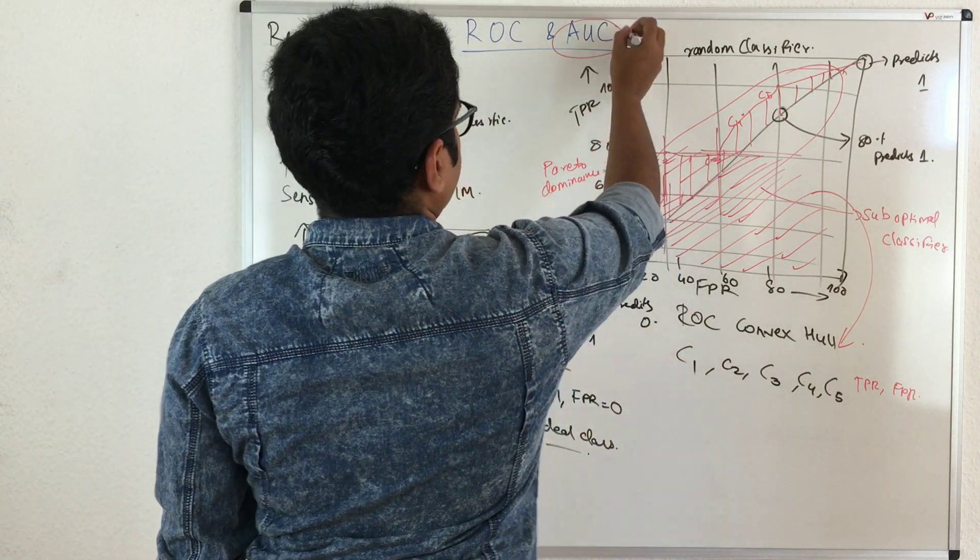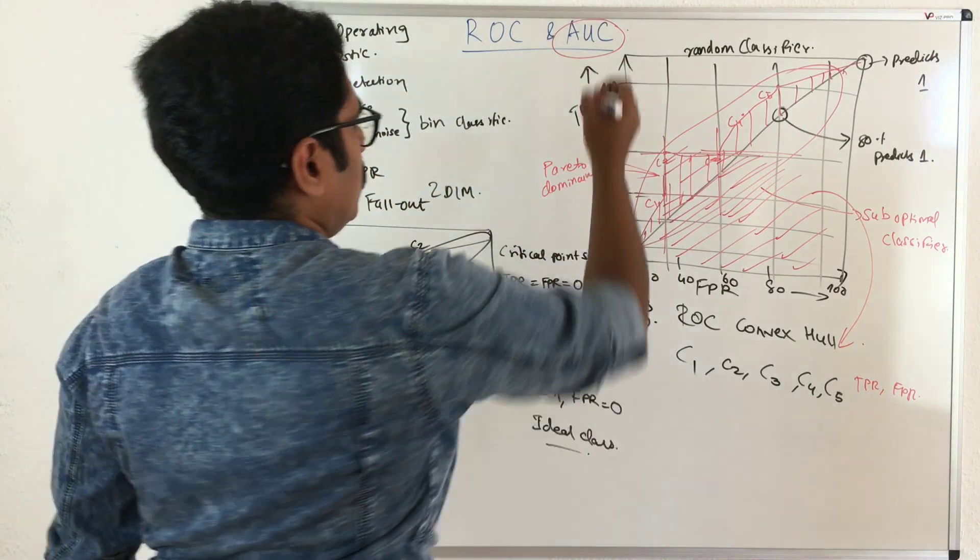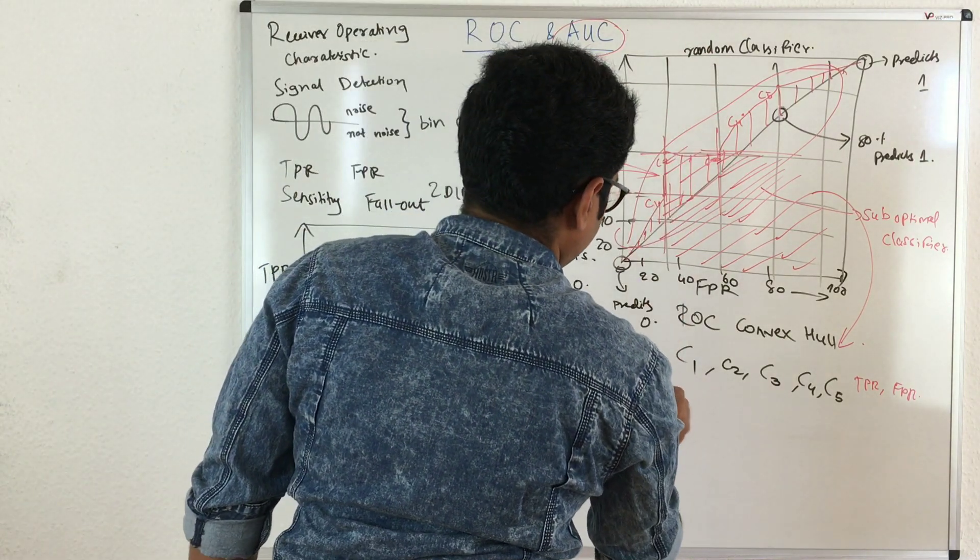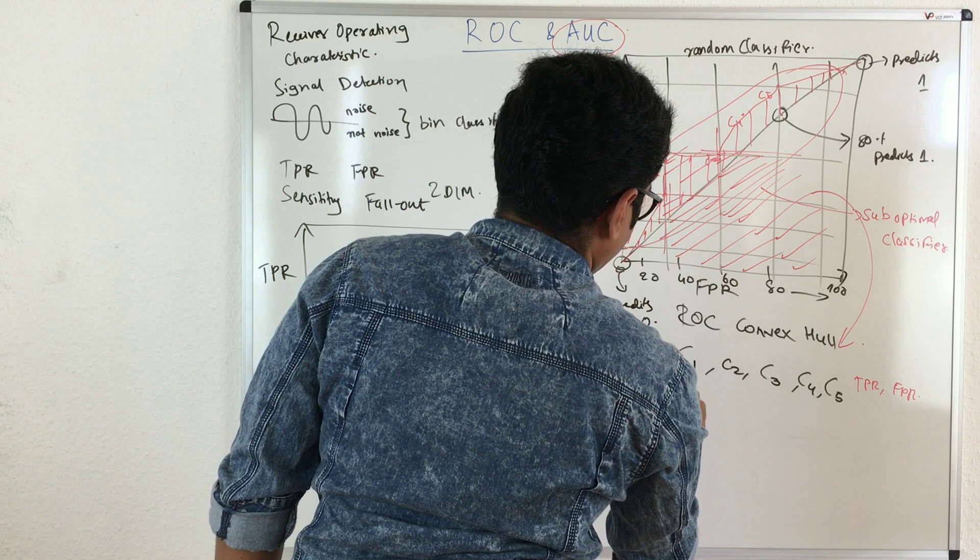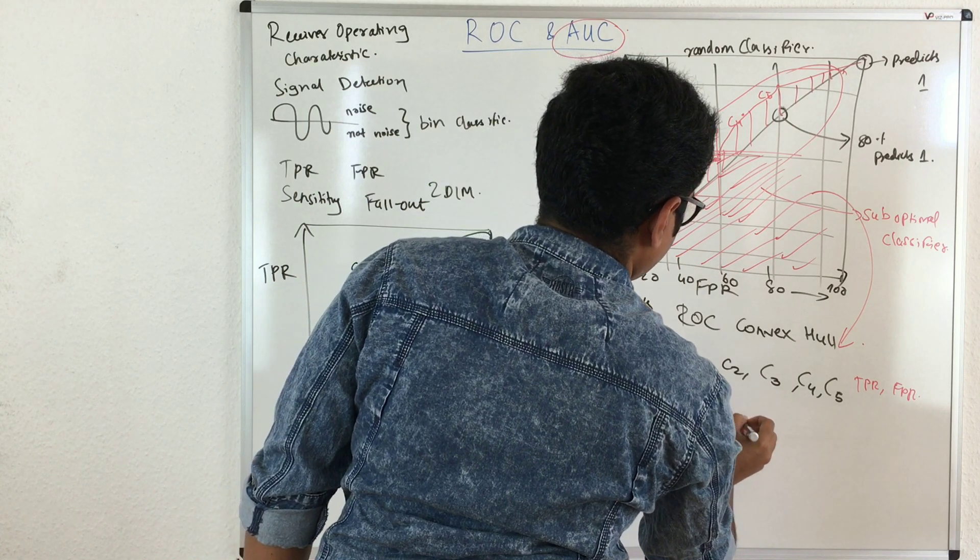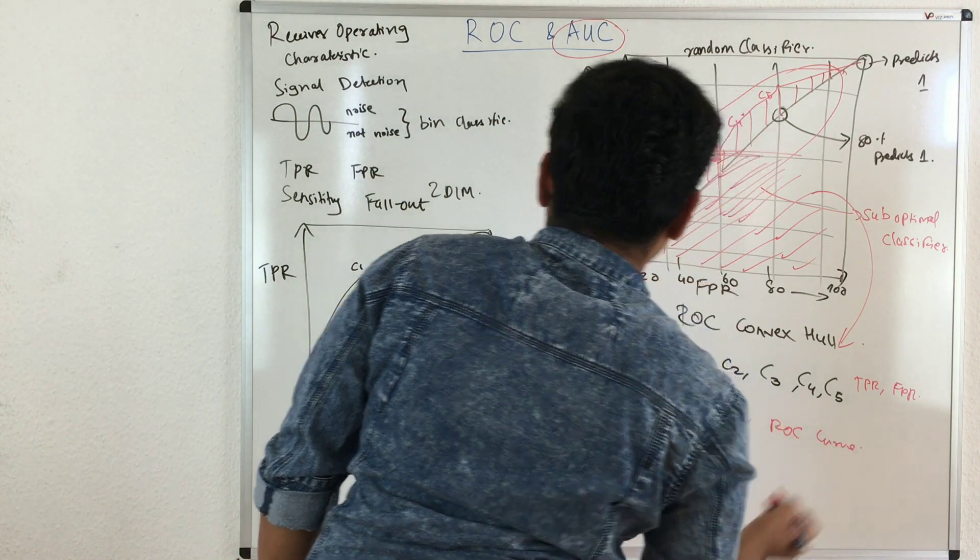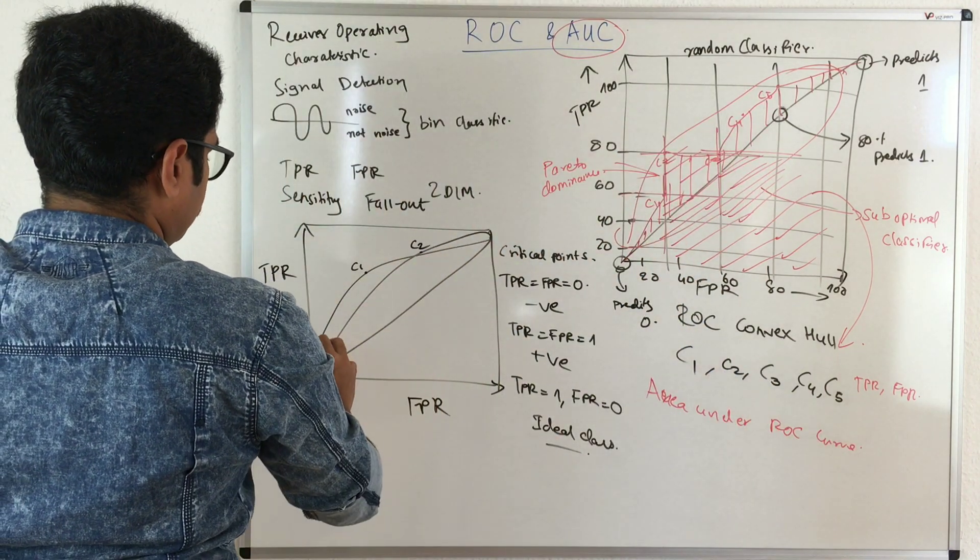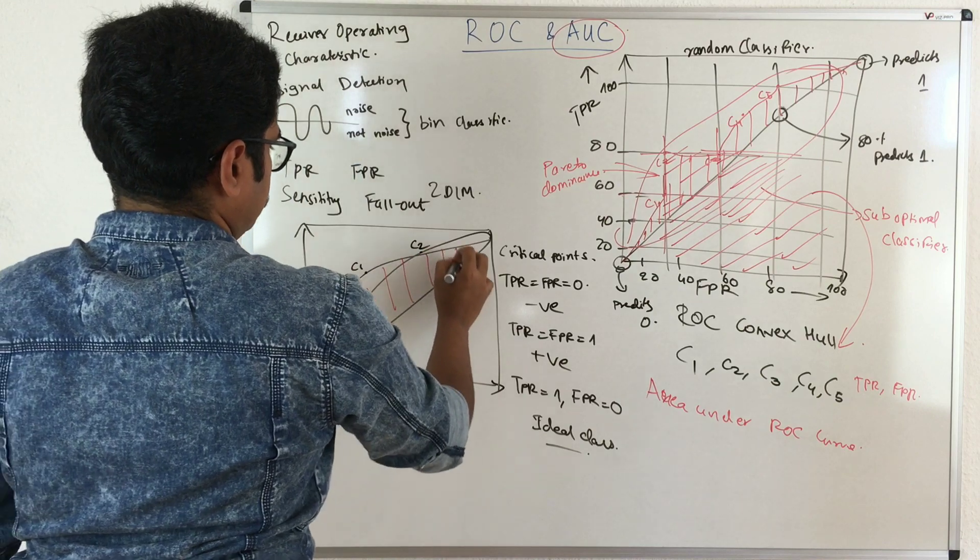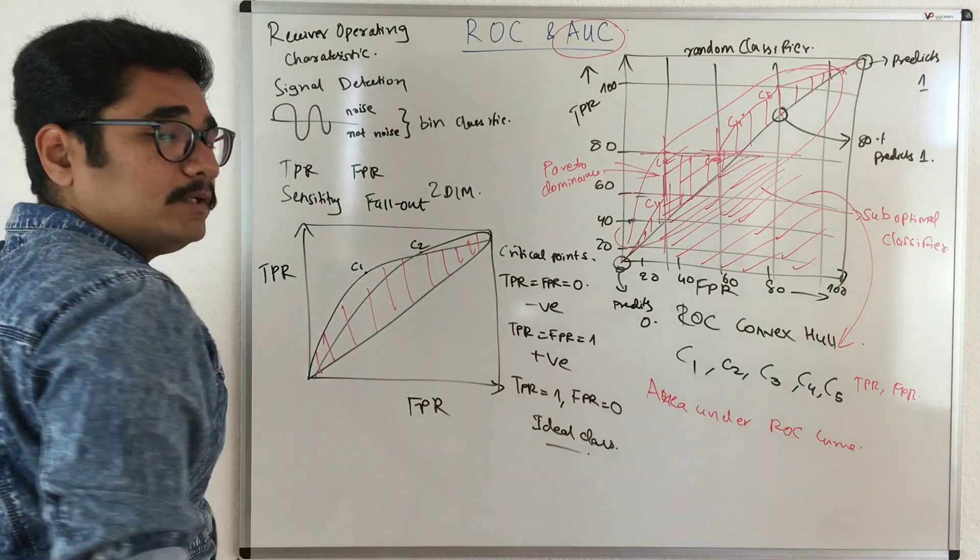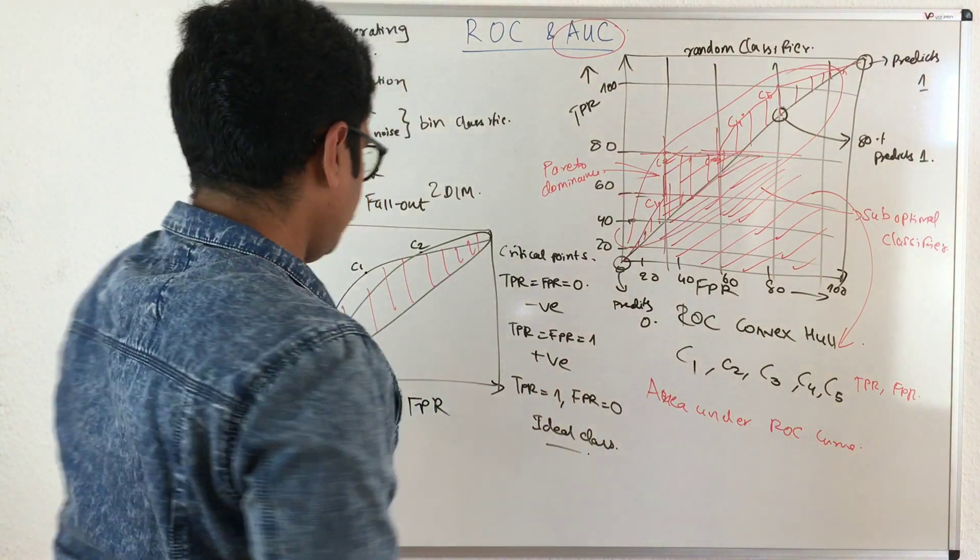Now let's discuss the term AUC, that is area under the curve. That's simply your area under your ROC curve. For here you have this portion which is the AUC.